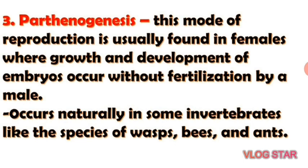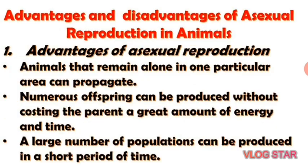In bees, the queen bee mates only once. She can then produce either unfertilized eggs or fertilized eggs. The unfertilized eggs will become male drones, while the fertilized eggs will become female workers or queens. Here are the advantages and disadvantages of asexual reproduction.